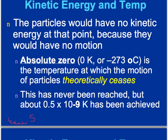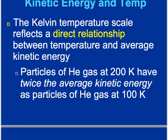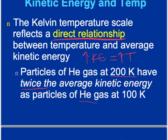The Kelvin temperature scale reflects a direct relationship between temperature and average kinetic energy — as Kelvin increases, temperature also increases. For example, particles of helium gas at 200 Kelvin have twice the average kinetic energy of helium particles at 100 Kelvin, showing that it's a proportional relationship.